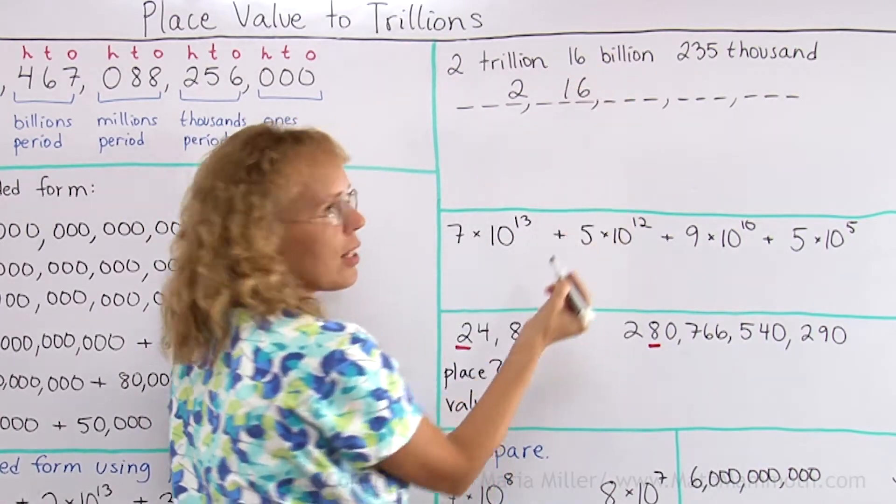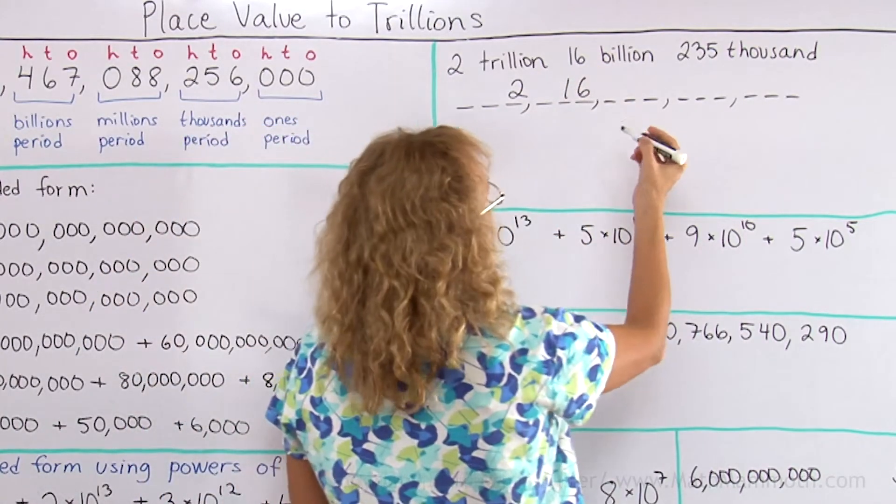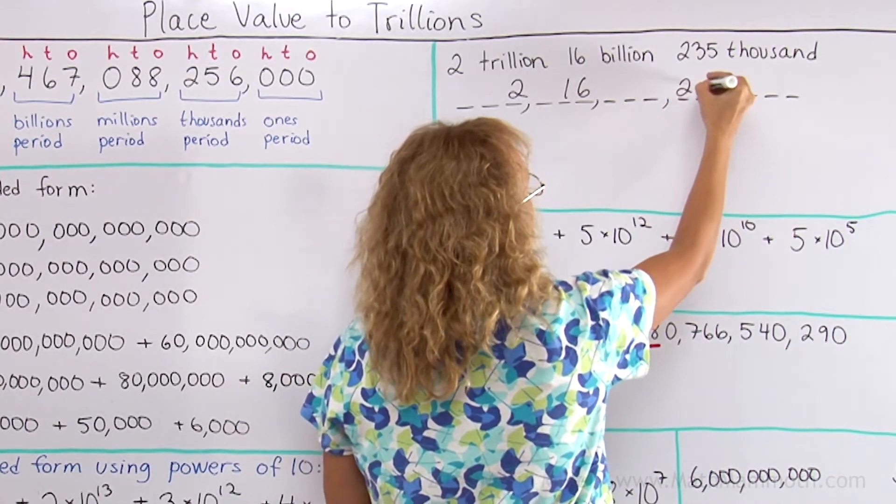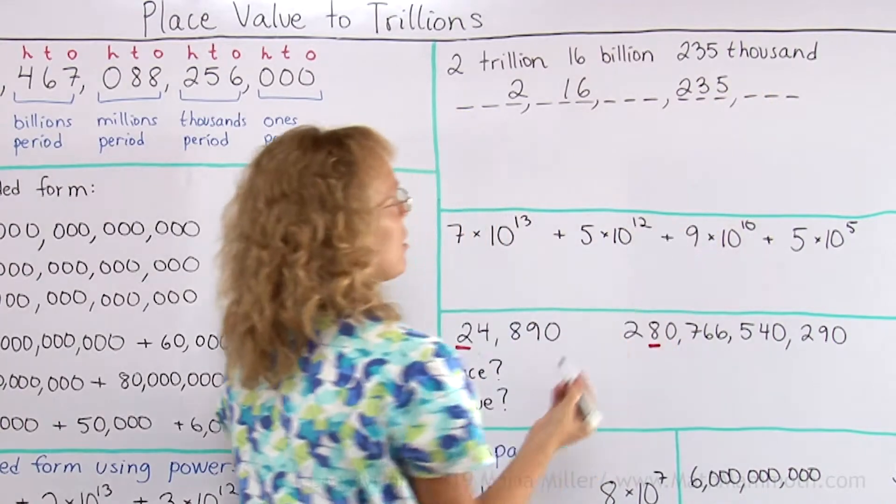16 billion—it's 16 here in the billions period. Then millions period, and there's none, and so I skip that and go here: 235 thousand. Okay?